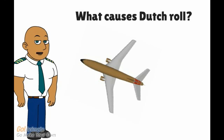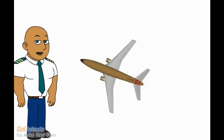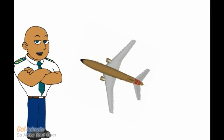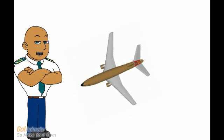Allow me to explain the cause of Dutch roll. It occurs when a yaw is induced either by a natural disturbance or by a yaw input on a swept-wing aircraft. The left wing will travel faster and becomes more straight to the relative airflow, creating more lift. On the inner right wing the lift is reduced. The increased lift also increases the drag on the left wing. The result is a yaw in the opposite direction, followed by another Dutch roll.